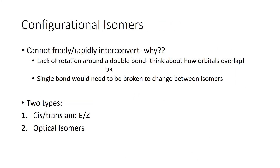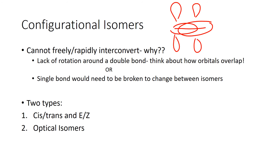Configurational isomers cannot freely and rapidly interconvert, and there are two possible reasons. The first is lack of rotation around a double bond. A pi bond forms above and below the bond axis, which locks it in place and doesn't allow free rotation. The other reason is that in order to change between the isomers, we would have to break a single bond. The first reason pertains to cis/trans and EZ isomers, and the second pertains to optical isomers.